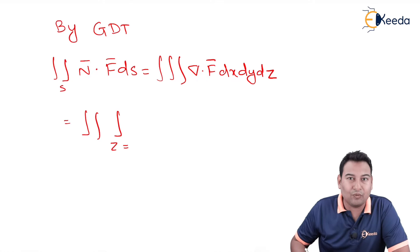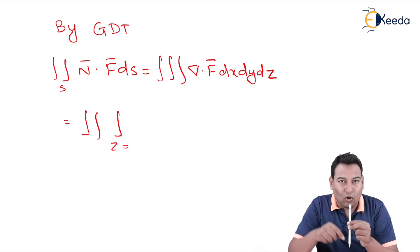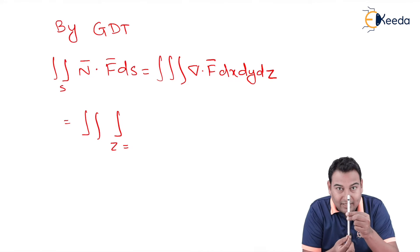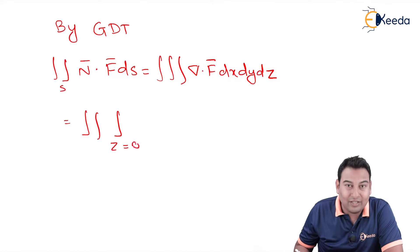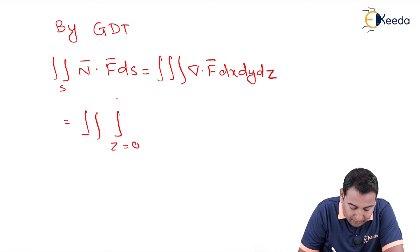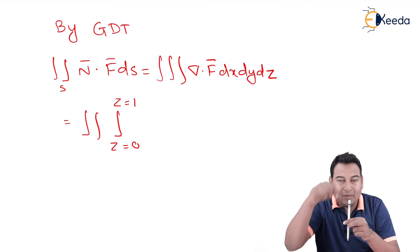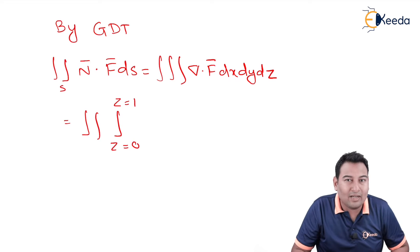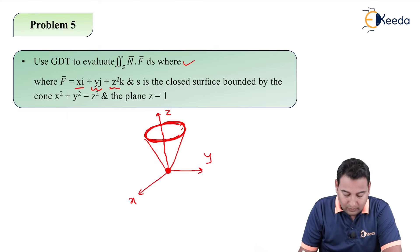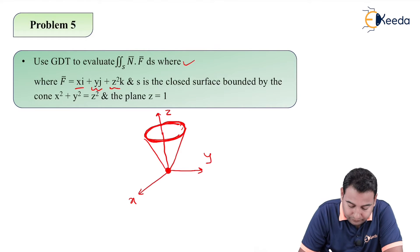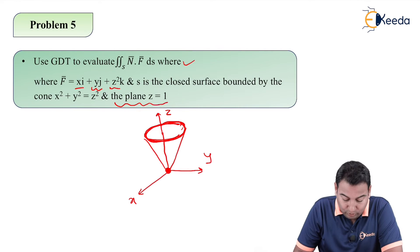Two integrations will remain as it is. Here it will be z equal to what? As discussed, it is a cone. On top it is circle and at bottom it is a point. Therefore, at origin z equals 0. At the top it is z equals 1. That is also provided in the problem. See here. And the plane z equals 1. Let's do it.